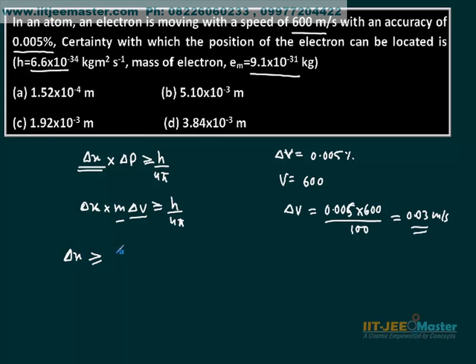Delta x will be greater than or equal to h upon 4 pi, that is 6.6 times 10 to the power minus 34 divided by 4 pi, mass times delta v.